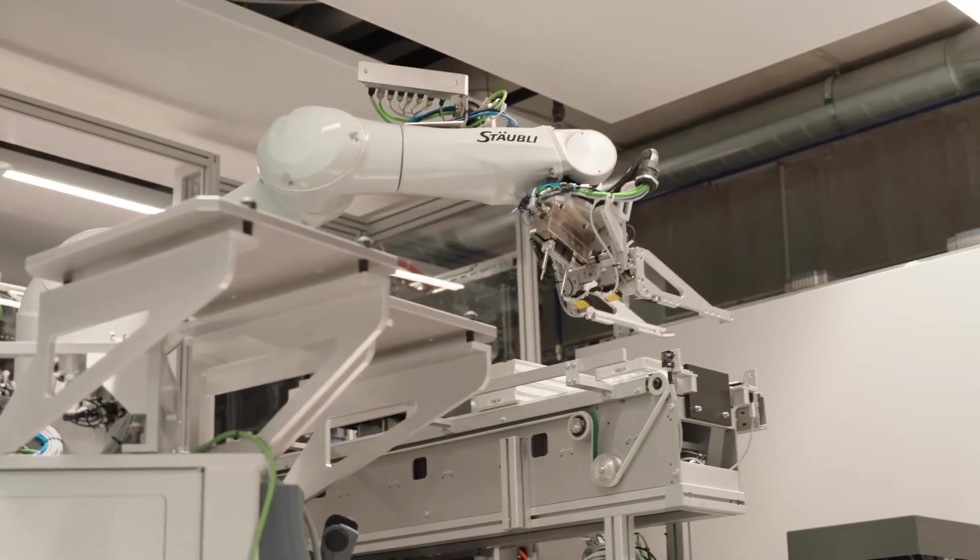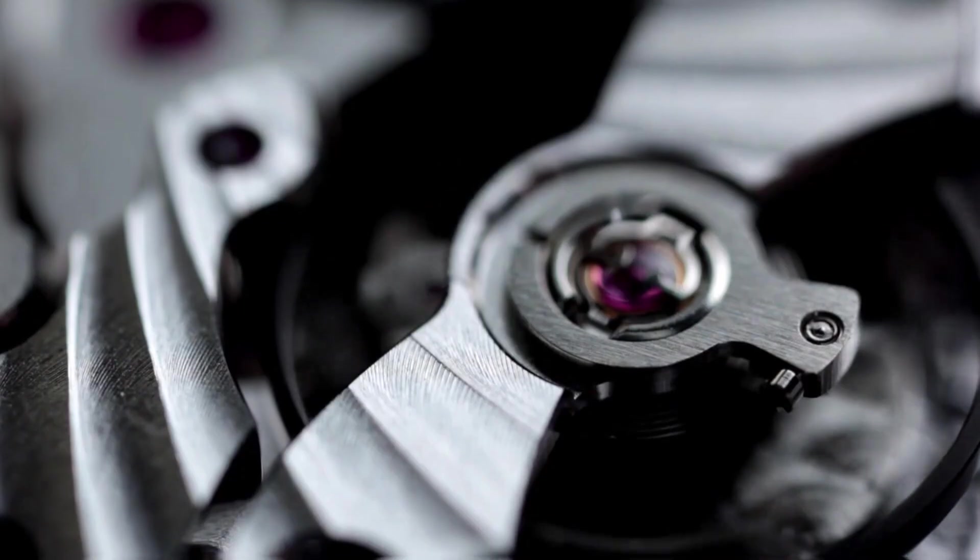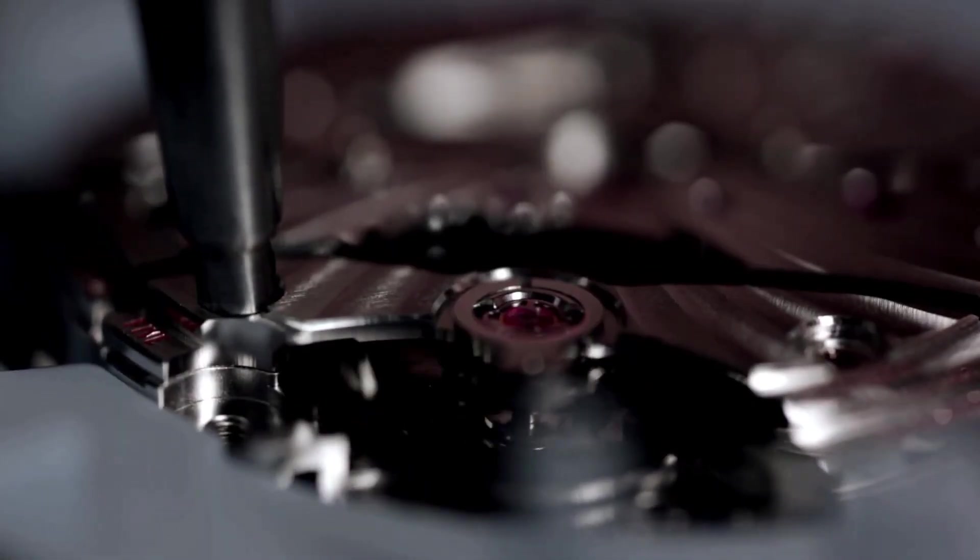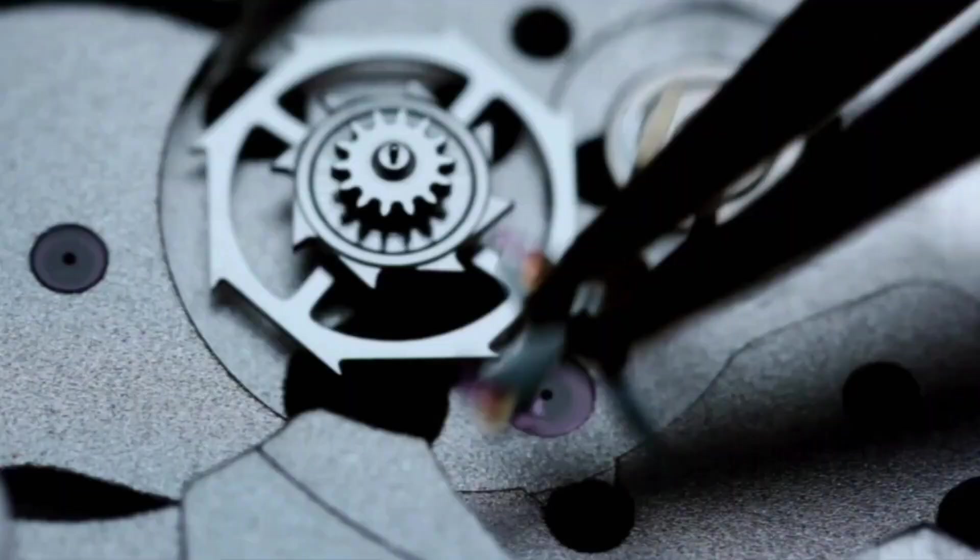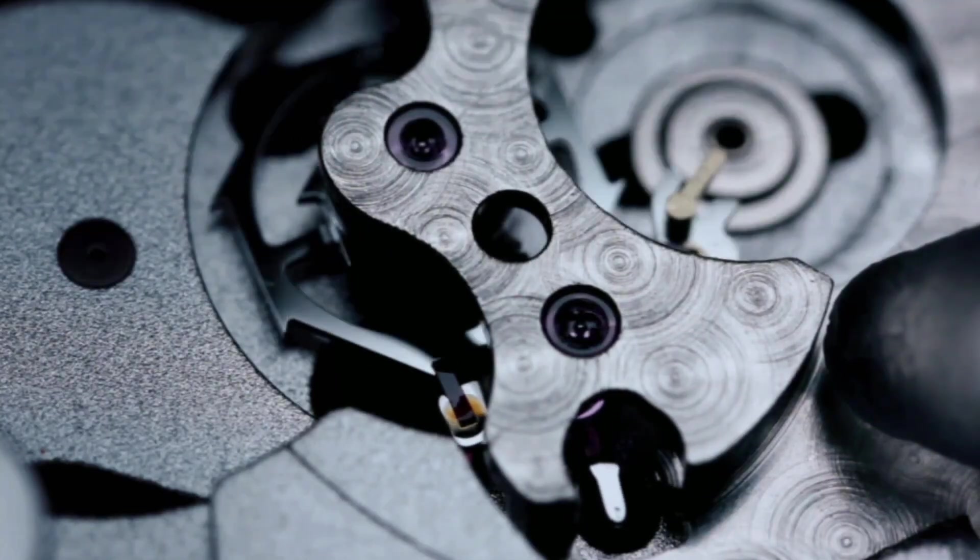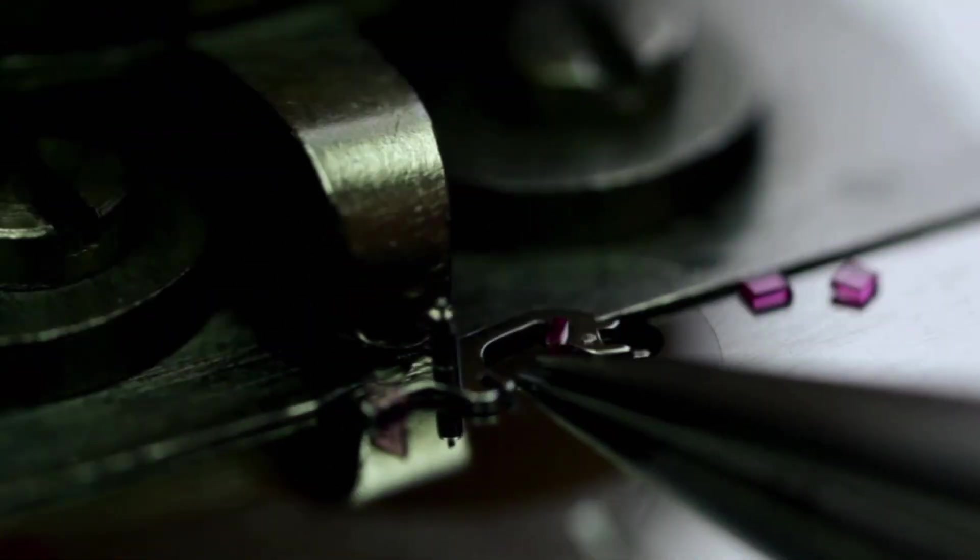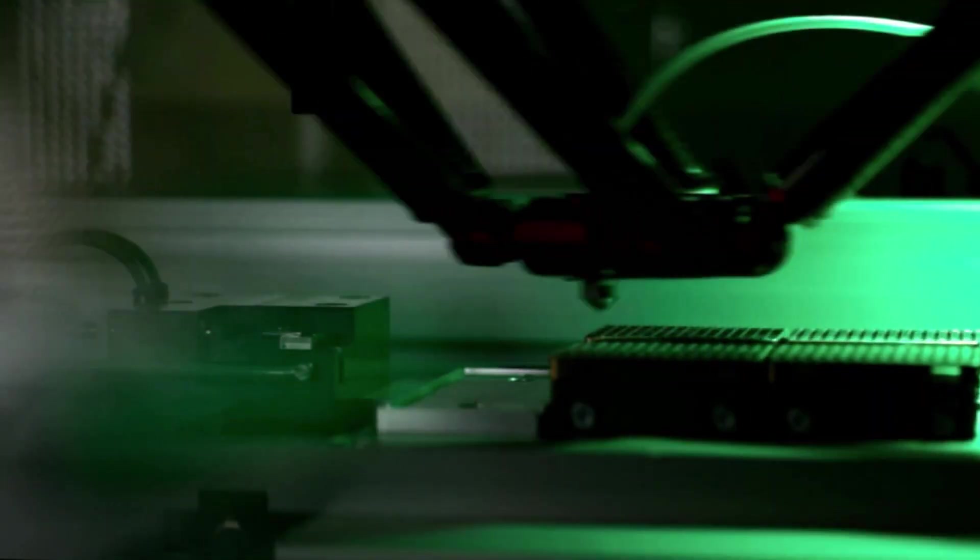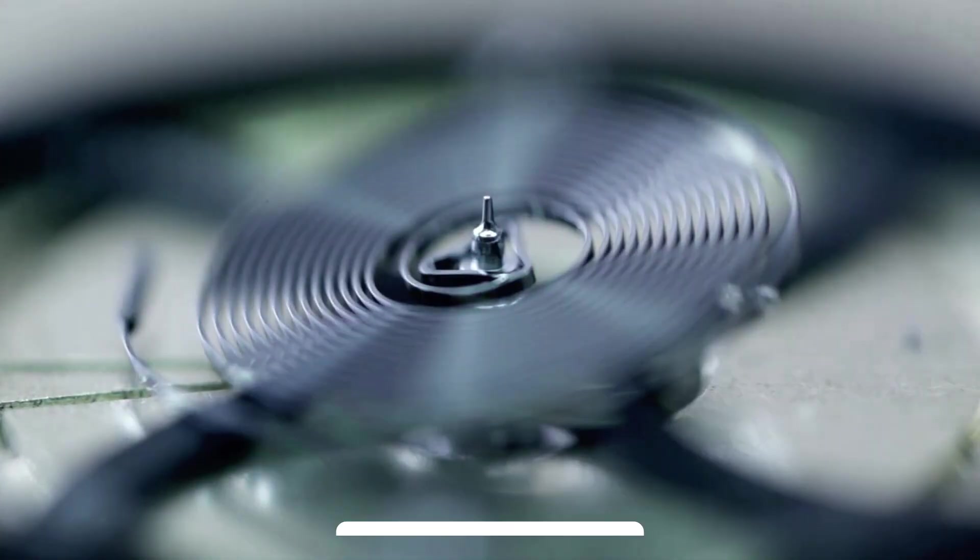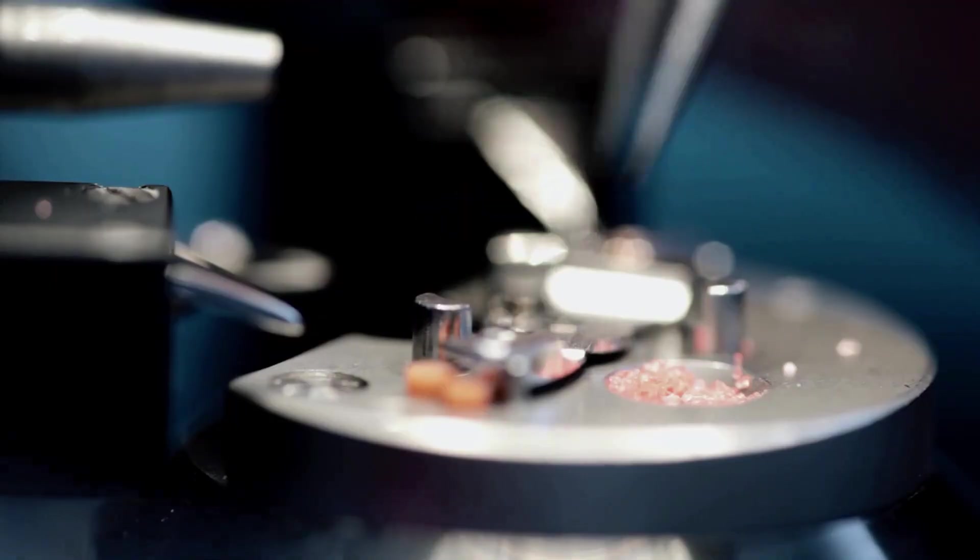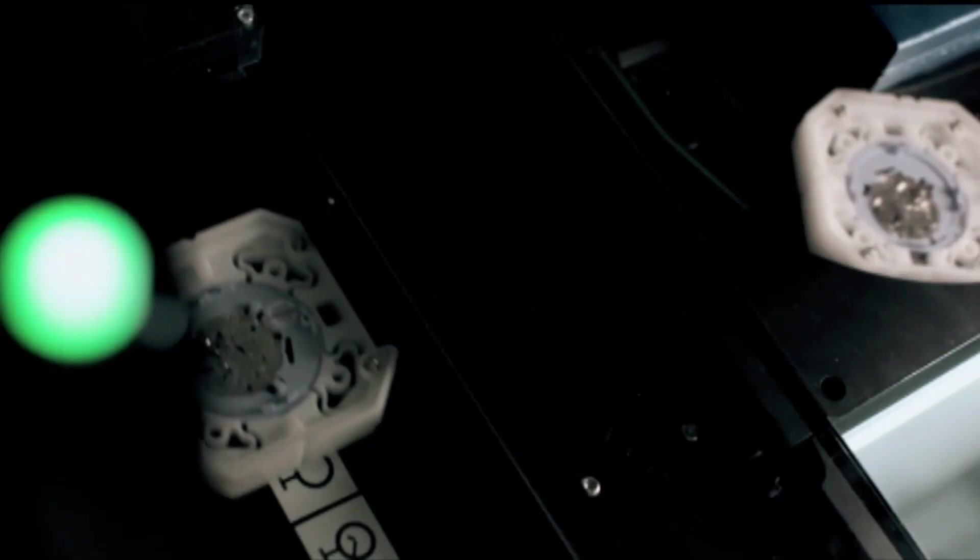Sure, robotic arms assist in applying uniform pressure, screwing down case backs, and sealing components, but judgment, touch, and patience are irreplaceable. Every gear must sit true, every jewel in its exact place. The fusion of hand and machine creates what neither could achieve alone. It's this step where Omega's craftsmanship truly reveals itself. Thousands of components, dozens of processes, countless hours, all converging into a single, unified mechanism. In this fragile, deliberate union, raw materials, design, and innovation finally become a living watch.